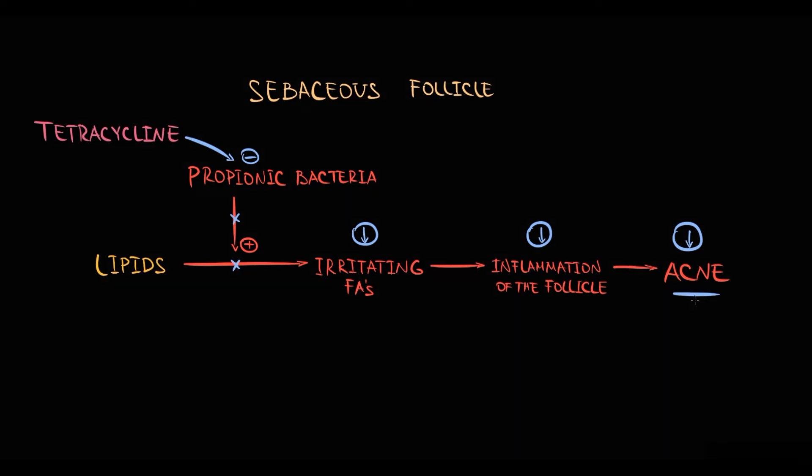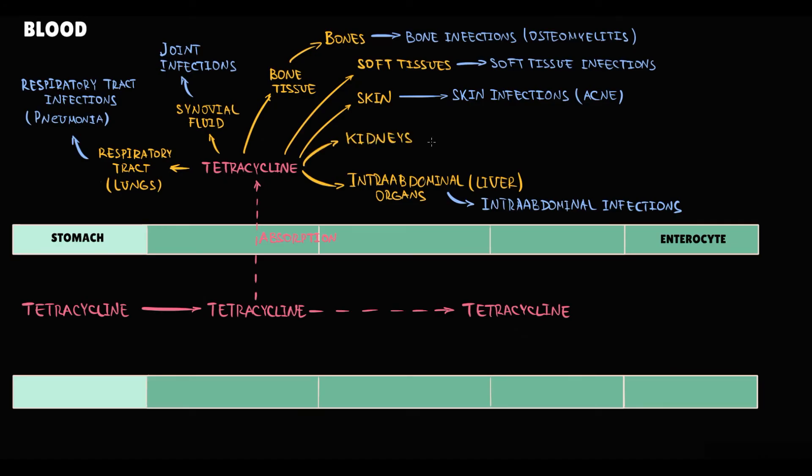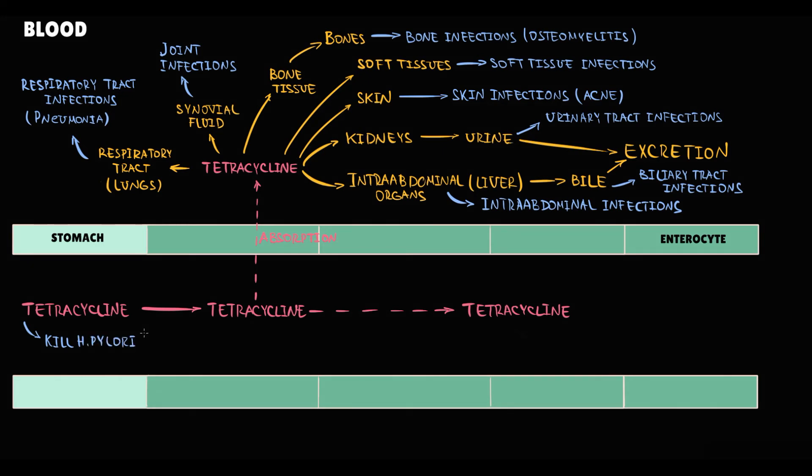From the organism, tetracyclines are excreted primarily by the kidneys through the urine. And because of that, they also can be used in treatment of urinary tract infections. And partially, tetracyclines are metabolized by the liver and excreted through the bile. So also tetracyclines can be used in treatment of biliary tract infections. Inside the stomach, tetracycline can kill Helicobacter pylori, a bacteria that causes ulcerations of the gastric mucosa and also greatly increases the risk of maltoma. So tetracycline is one of the components of eradication therapy in treatment of peptic ulcer disease and maltoma.